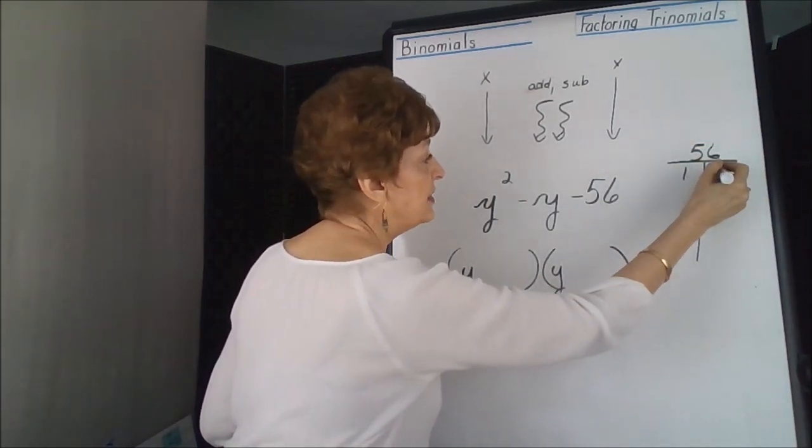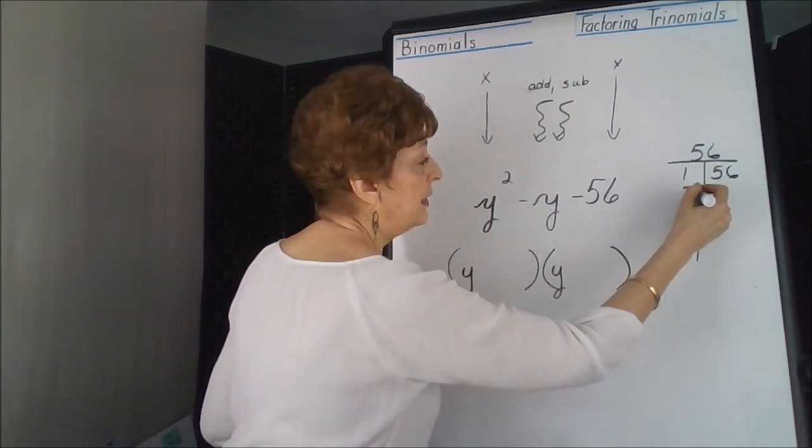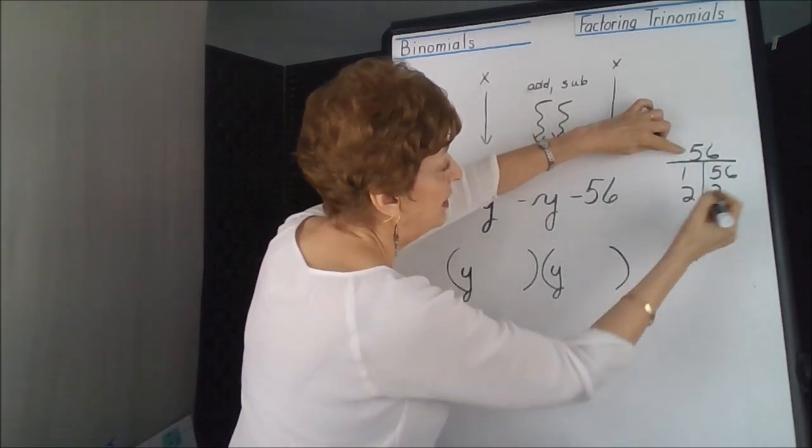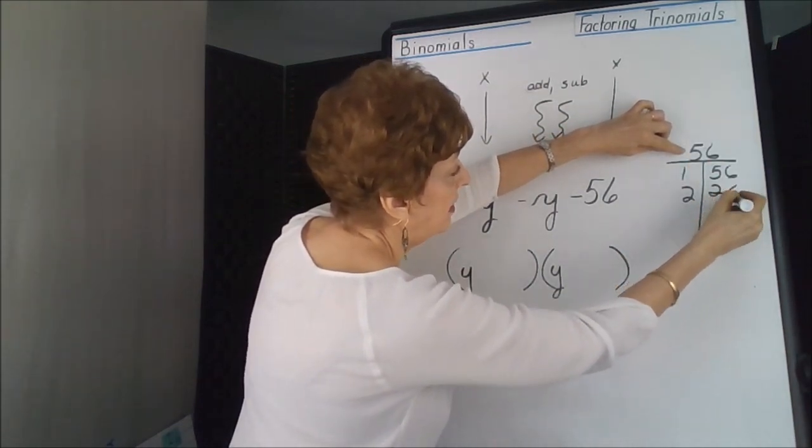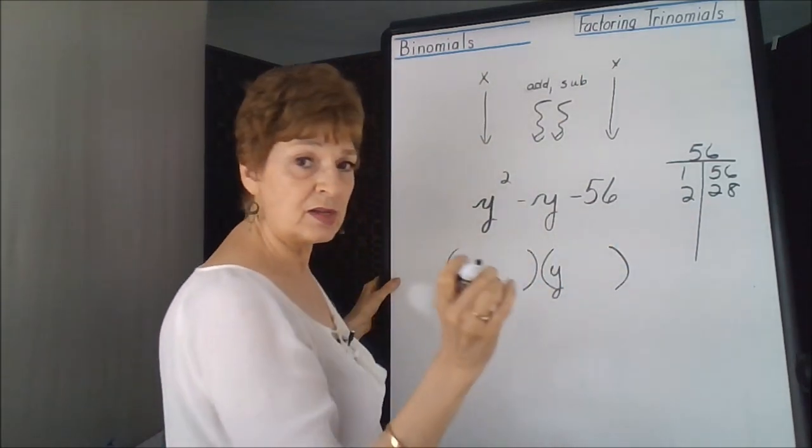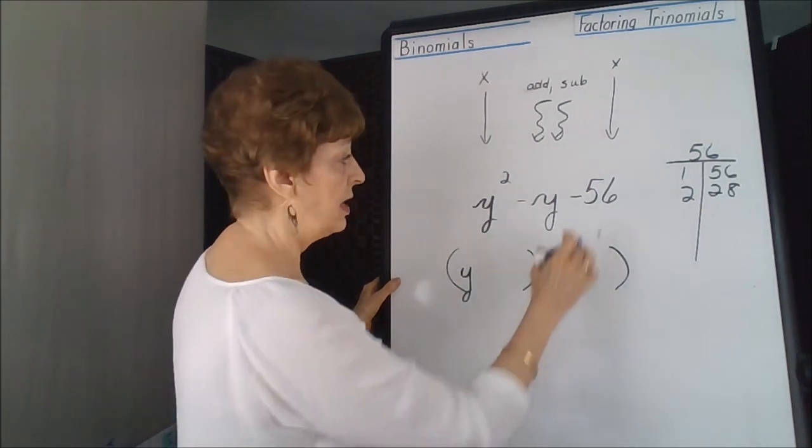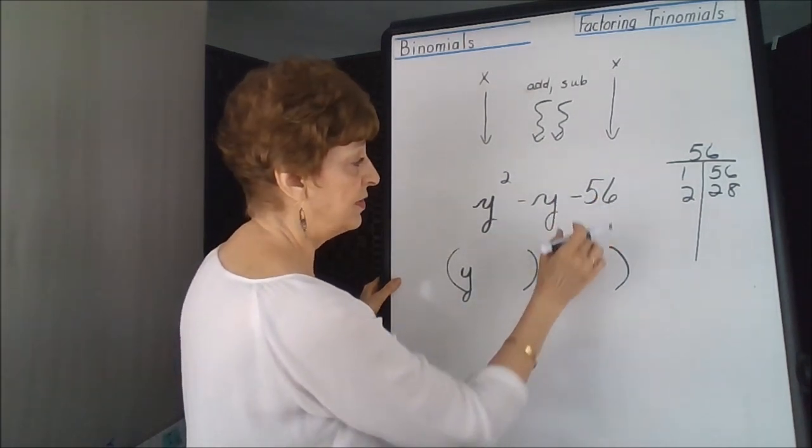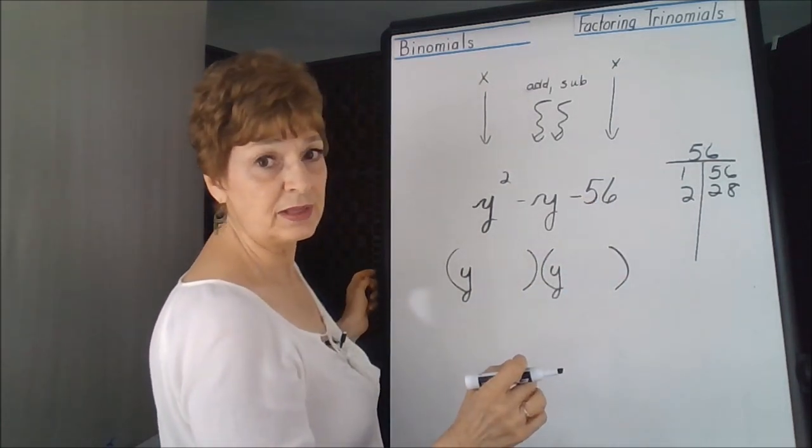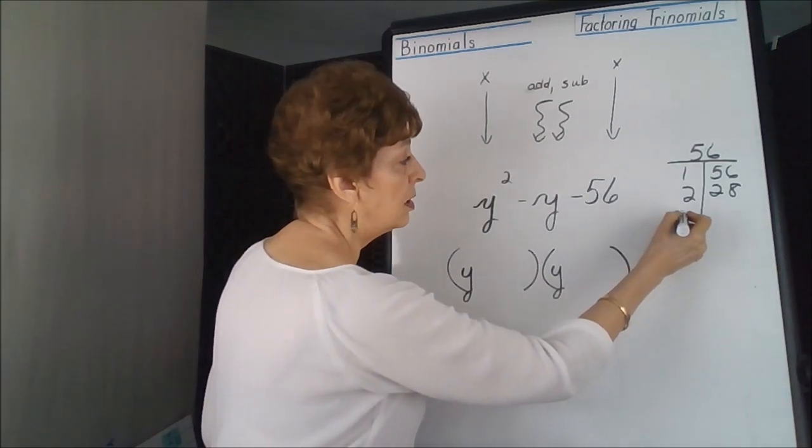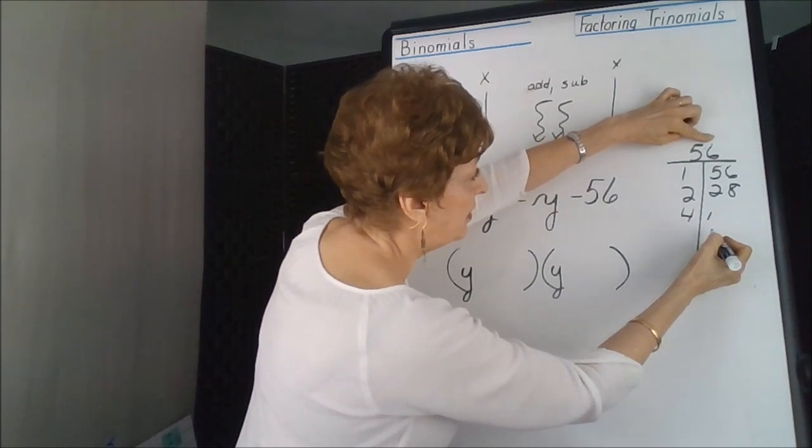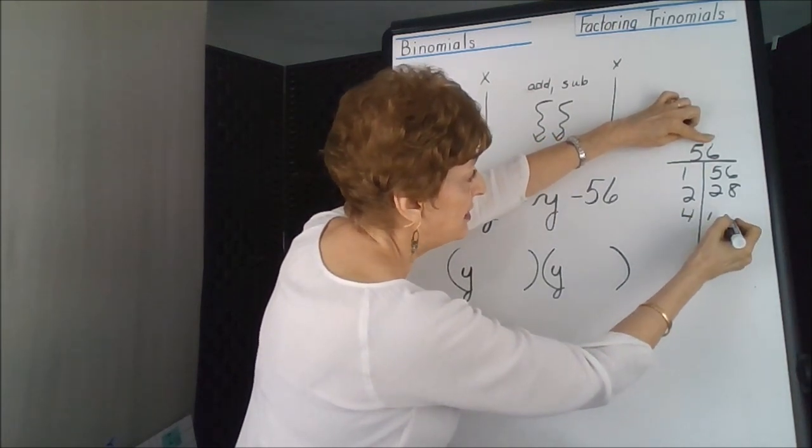1 times 56 works. 2, yes, it's an even number. 2 goes into 5 twice with one left over. 2 goes into 16 eight times. 2 times 28 is 56. Will 3 work? This goes back to the divisibility of numbers. I'm going to add my digits for 56. 5 plus 6 is 11. 3 will not divide into 11 evenly, let's pass. How about 4? 4 goes into 5 one time with one left over, that's 16. 4 goes into 16 four times.